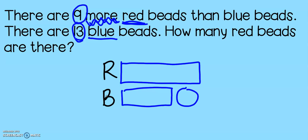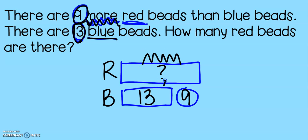Now we can plug in our numbers. Nine more — that means the nine goes in the circle because it's a special word with more or fewer. And there are 13 blue beads, so let's give blue 13. That means I am looking for the king of my math mountain, so let's add 13 plus nine.